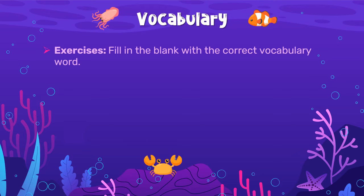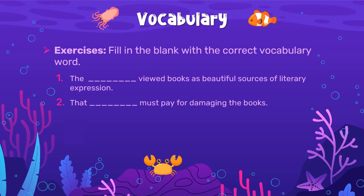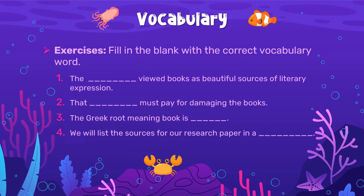Now, fill in the correct vocabulary word in the blank. Sentence number one: the blank viewed books as beautiful sources of literary expression — so what kind of person would that be? Sentence two: that blank must pay for damaging the books — so if someone is destroying the books, what kind of person would that be? Sentence three: the Greek root meaning book is blank. Sentence four: we will list the sources for our research paper in a blank.